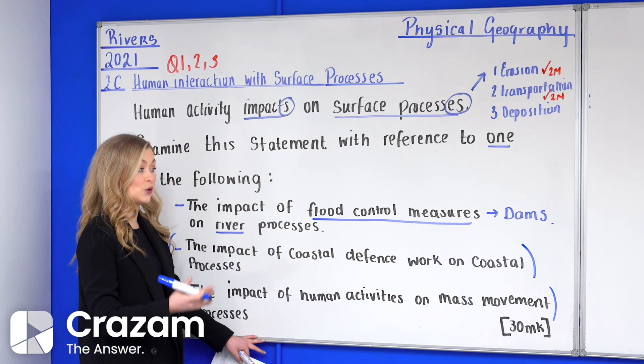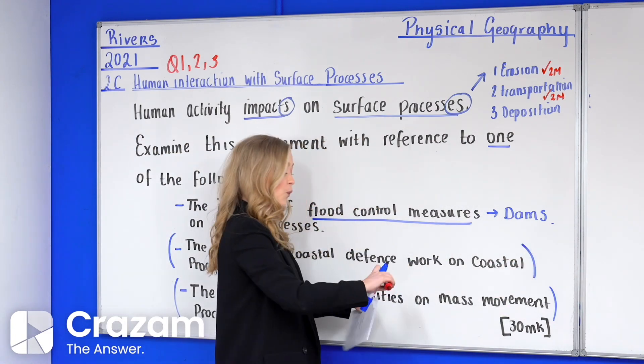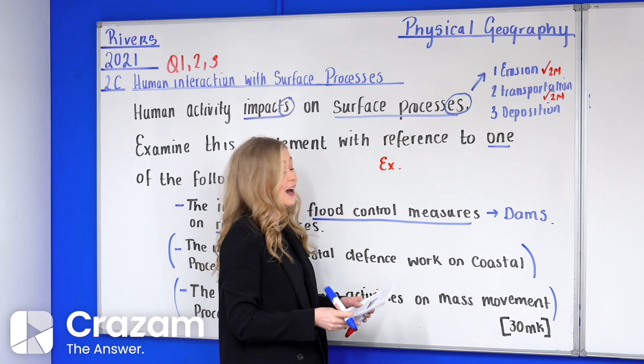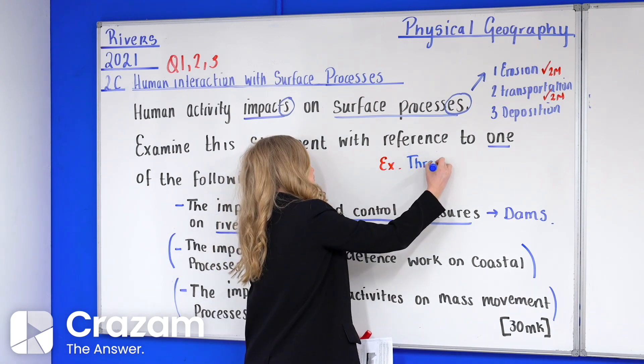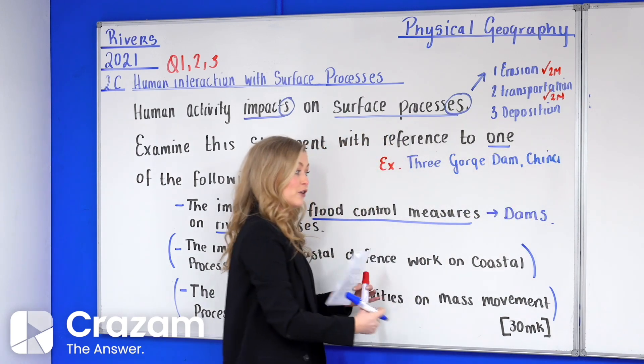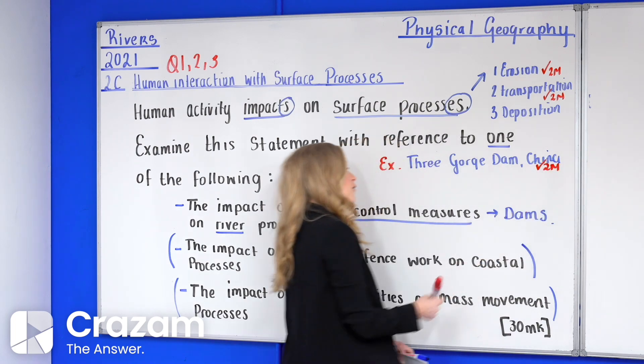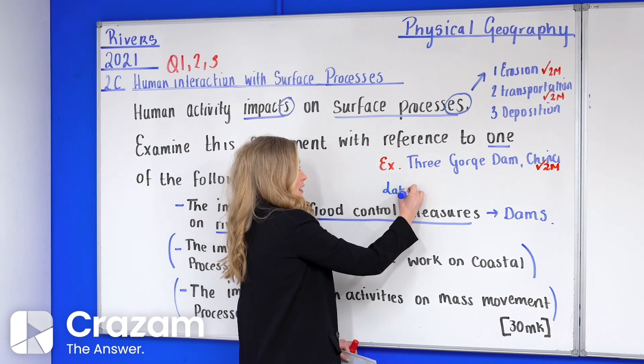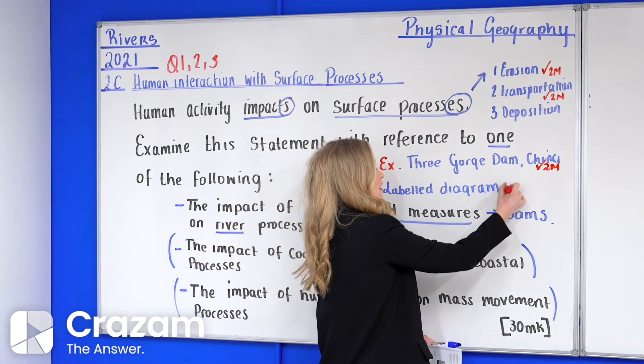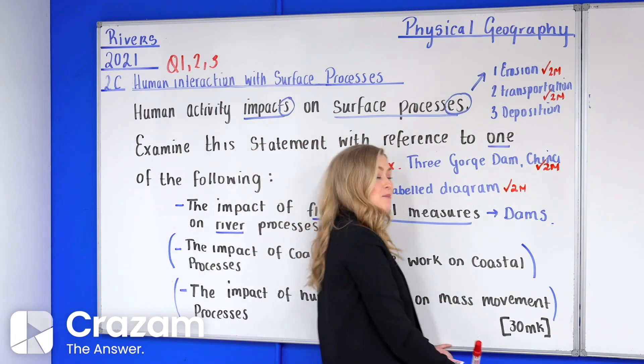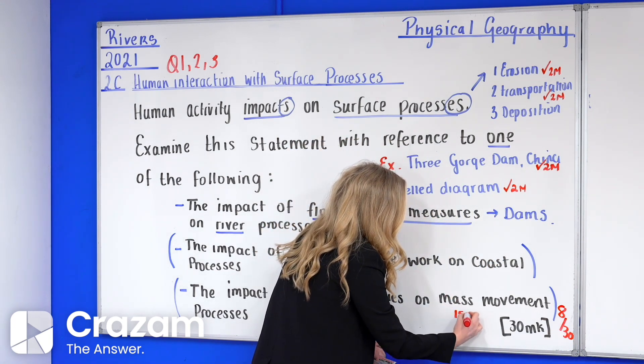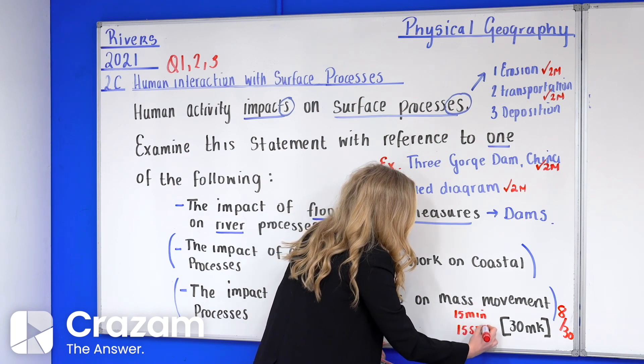Now when we're looking at the impact of flood control measures what might we give in relation to dams? We're going to give our examiner an example of a dam and there's a lot of examples to actually go from but here I'm going to go for the Three Gorge Dam in China. That's along the Yangtze River. That there will get me an additional two marks. Finally I'm going to pop in a little labelled diagram of my dam and how it works. That's going to get us an additional two marks.